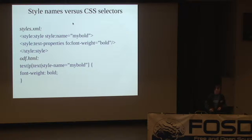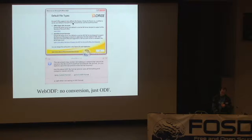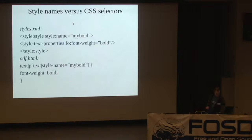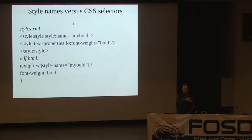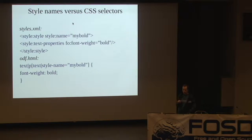So that's basically how the conversion works. What we're doing here is changing the ODF styles into CSS, but when we're editing, we will first edit the actual ODF and then redo the translation. So when we're editing — which we're actually not supporting yet, but which we're planning — we will be editing the actual ODF and then recalculate what the CSS looks like.